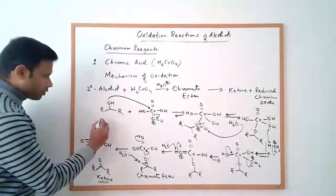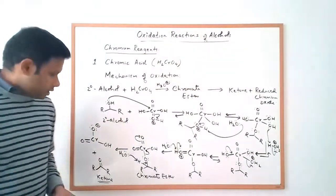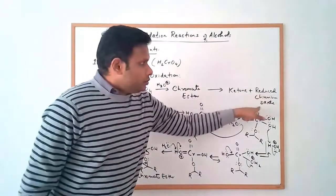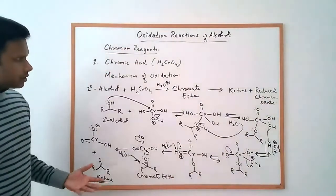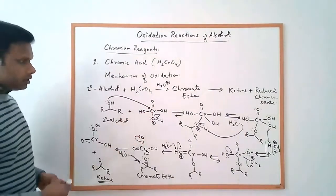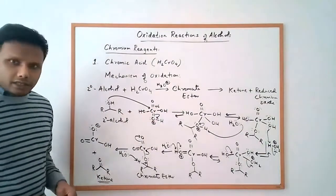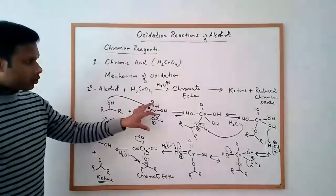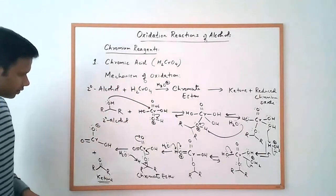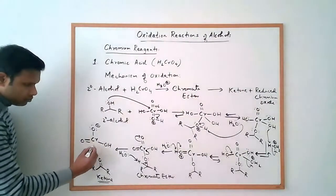Along with the reduced chromium species, we get the ketone product. That's how we obtain the ketone — through the oxidation of a secondary alcohol. The secondary alcohol we started with is converted into the ketone, and you get a reduced chromium oxide.